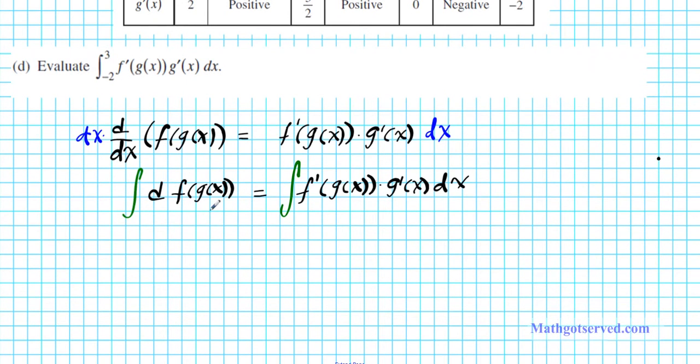And then if you integrate both sides, just look at this as a variable like dy. If you integrate one dy, you just end up with y. So on the left side, this is simply going to be f of g of x equals the integral of f prime of g of x times g prime of x.